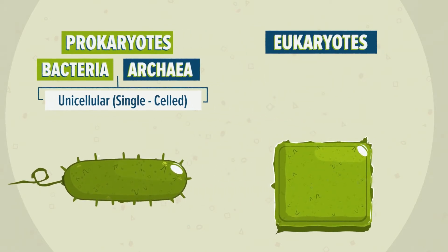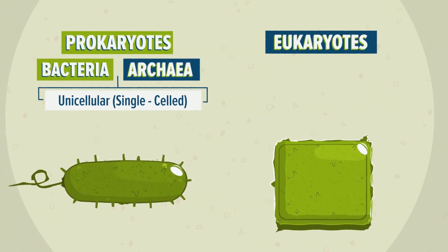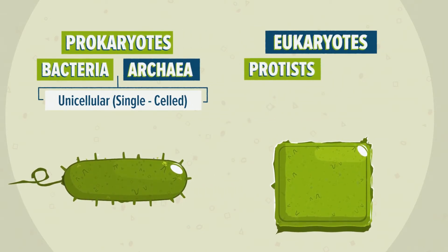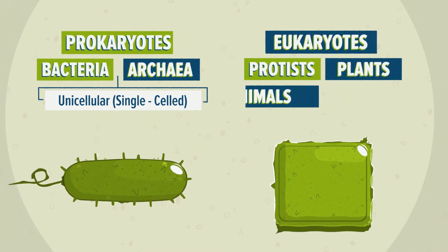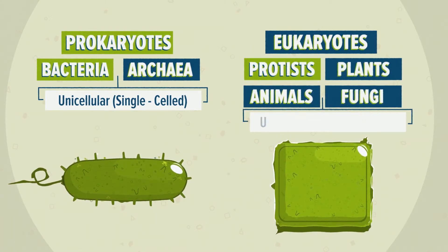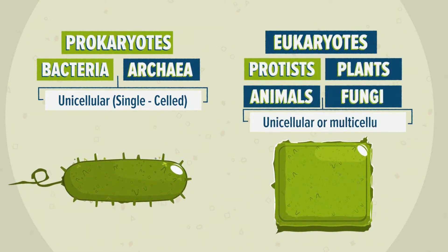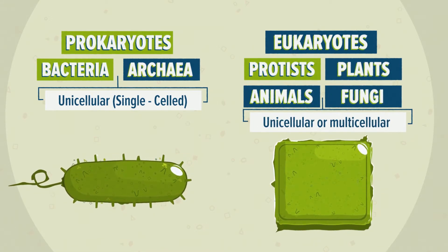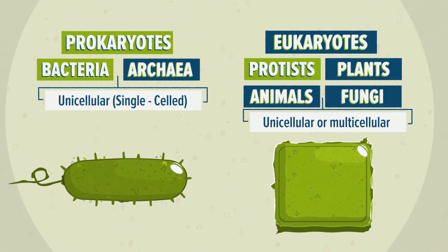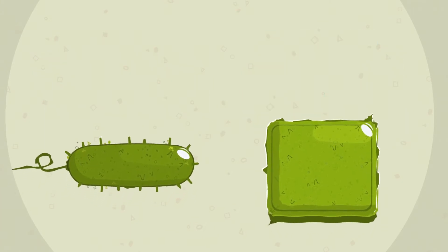Eukaryotes cover more complex organisms, such as protists, plants, animals and fungi. They can be unicellular or multicellular, making up complex organisms such as humans.